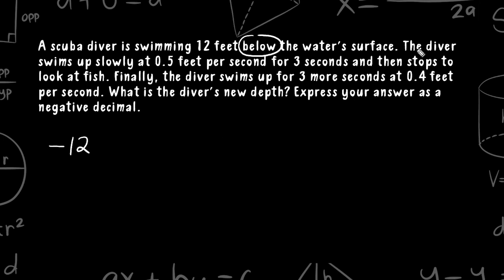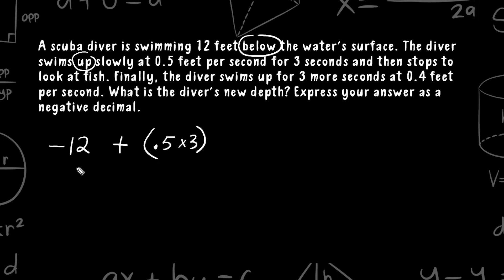Next, it says the diver swims up slowly at 0.5 feet per second for three seconds. Moving up would be a positive change of direction, and the rate of change is 0.5 per second for three seconds, so we multiply 0.5 by three. Then it says the diver swims up for three more seconds at 0.4 feet per second, so we take 0.4 and multiply that by three.